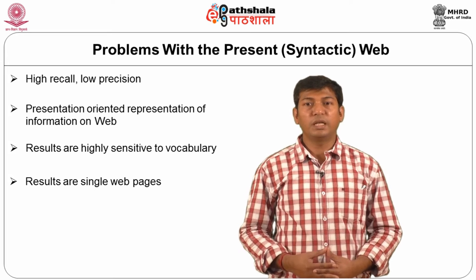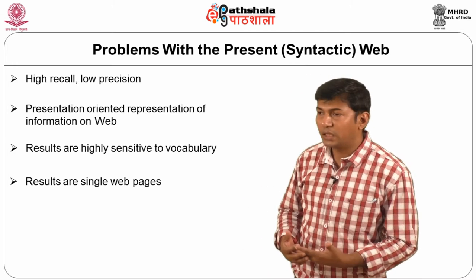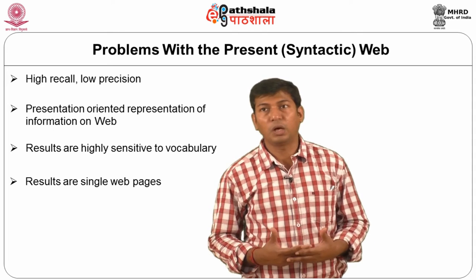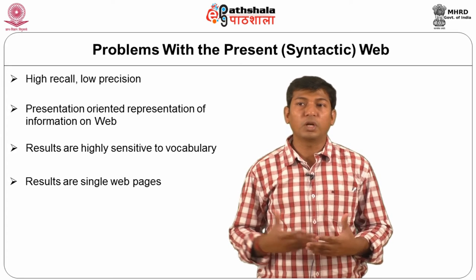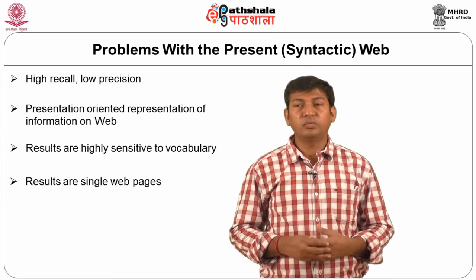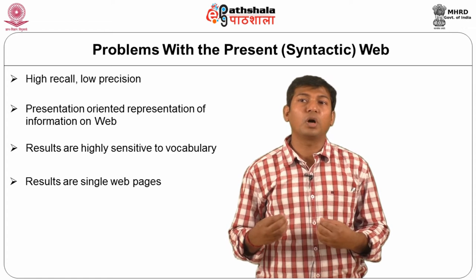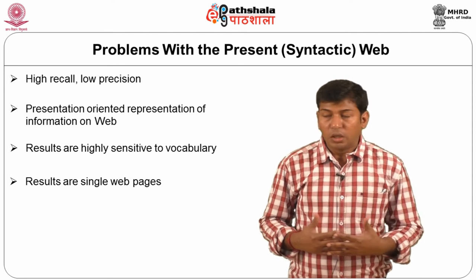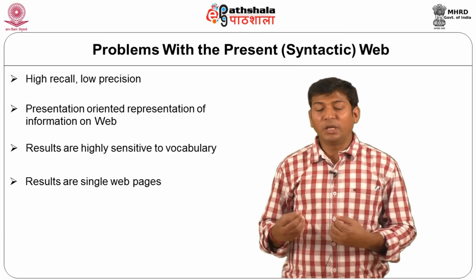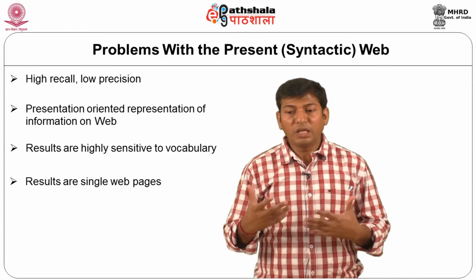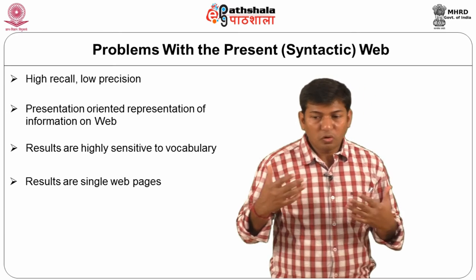From the previous slide we discussed our Google search experience. To summarize: the problems with the current web — the web we use everyday with search engines like Google or Yahoo — are that the recall is very high and the precision is very low. This is one of the problems among others. The second thing is that the current web is more presentation-oriented rather than being oriented toward semantic processing.